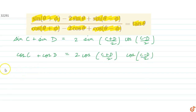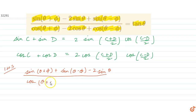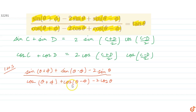So our left hand side can be written as sin(θ+5) plus sin(θ-5) minus 2sin θ, whole divided by cos(θ+5) plus cos(θ-5) minus 2cos θ. In the numerator, apply the formula for sin C plus sin D, and in the denominator, apply the formula for cos C plus cos D.